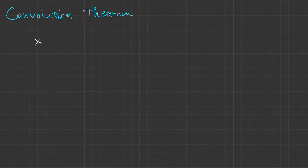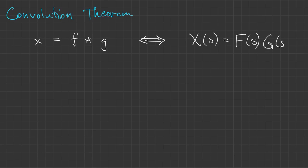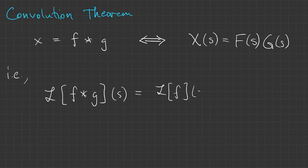Here's a big result known as the convolution theorem. It's quite easy to state. If x is f convolved with g, then the transform of x is the product of the transform of f and the transform of g. We could write this using the transform notation. The transform of a convolution is the product of the transforms.